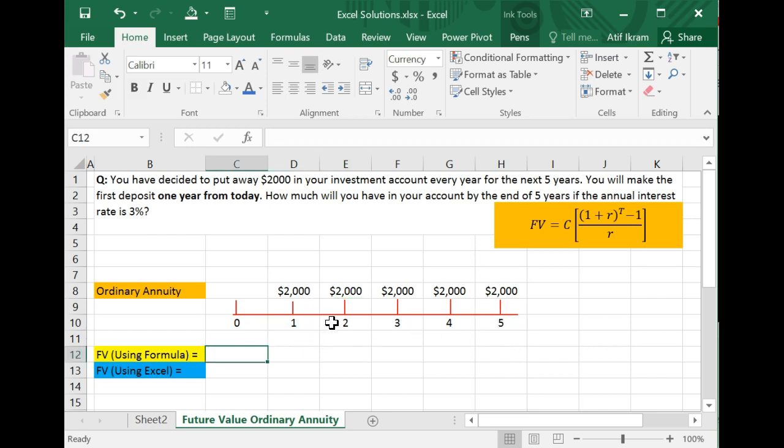Now there are two ways in which you can do this in Excel. One is the long-winded way where you take the future value of ordinary annuity formula and replicate this or implement this in Excel, which you can do. So basically your cash flow C is $2,000. Your interest rate is 3%. Your T is five years. So here's how you go about it.